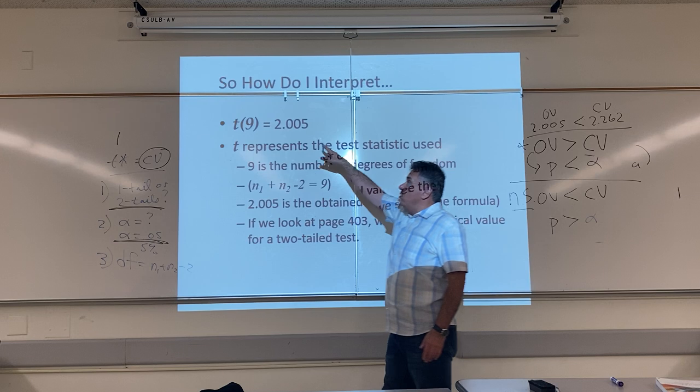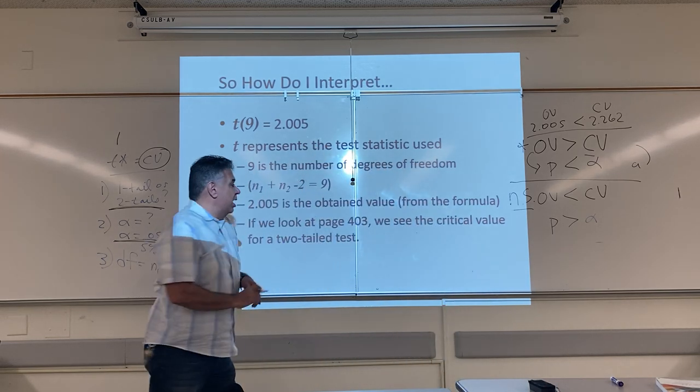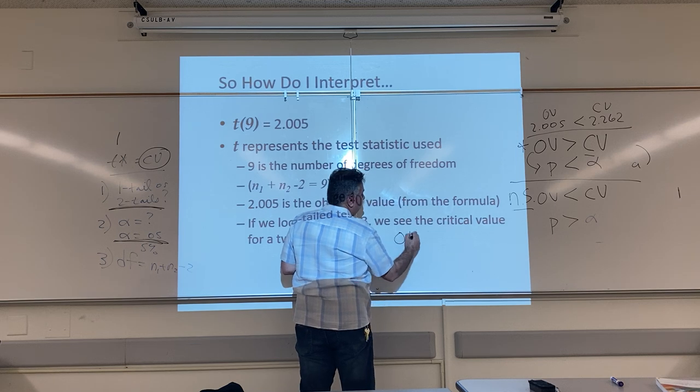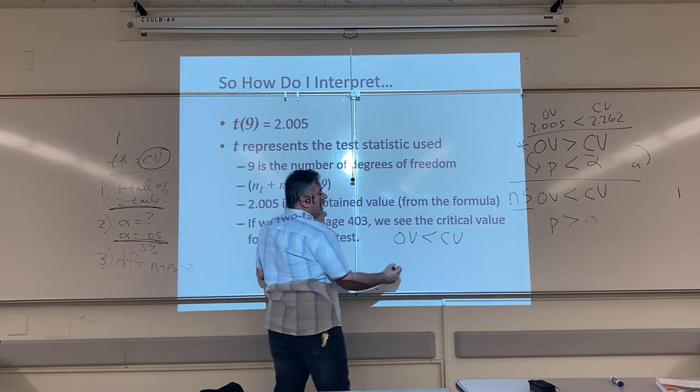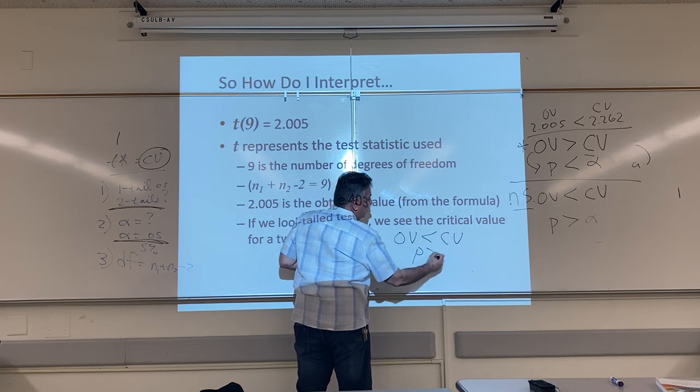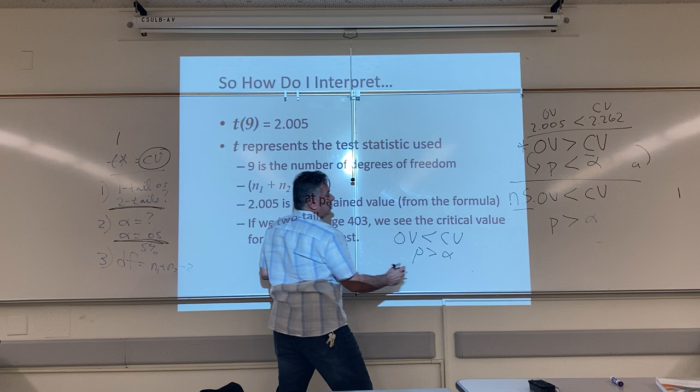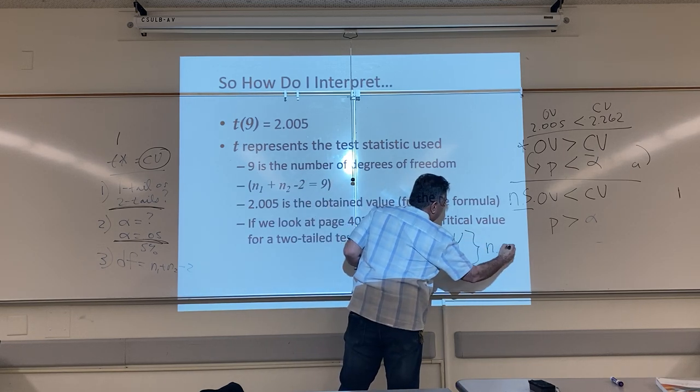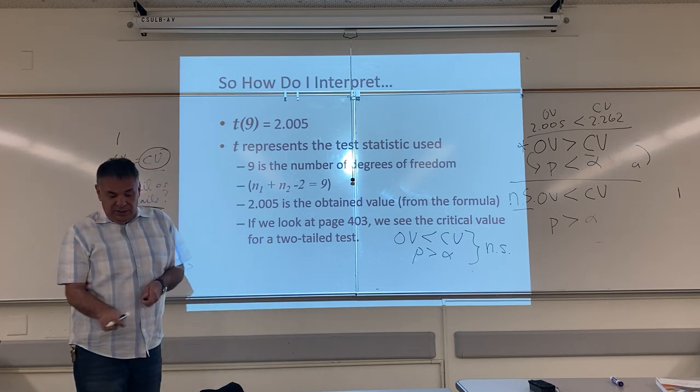I compared my answer, the OV, against the critical value. And what did I find? I found that the OV was less than the CV, which automatically tells me P must be bigger than alpha if I see either one of these things. I know that my results, my answer, is non-significant.